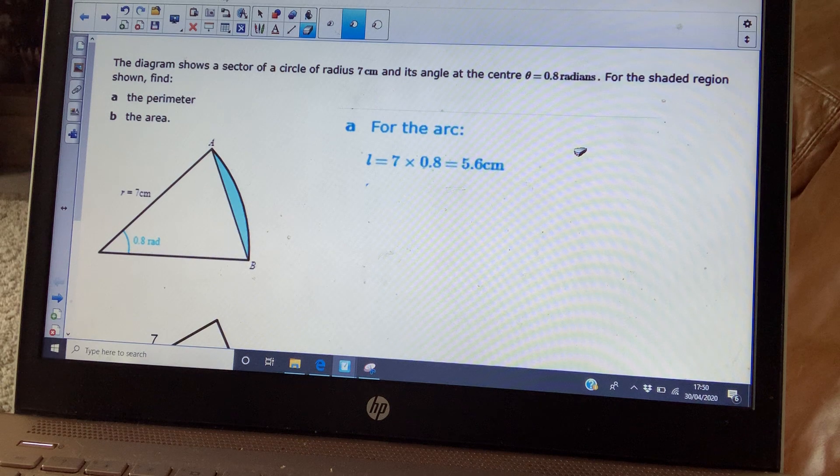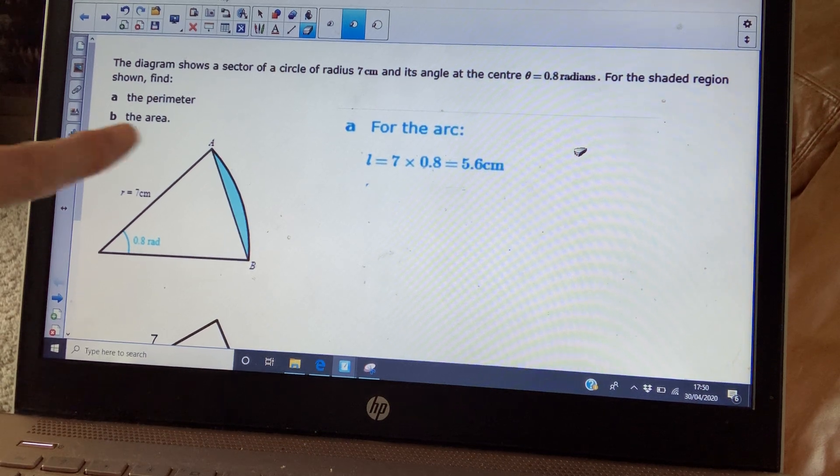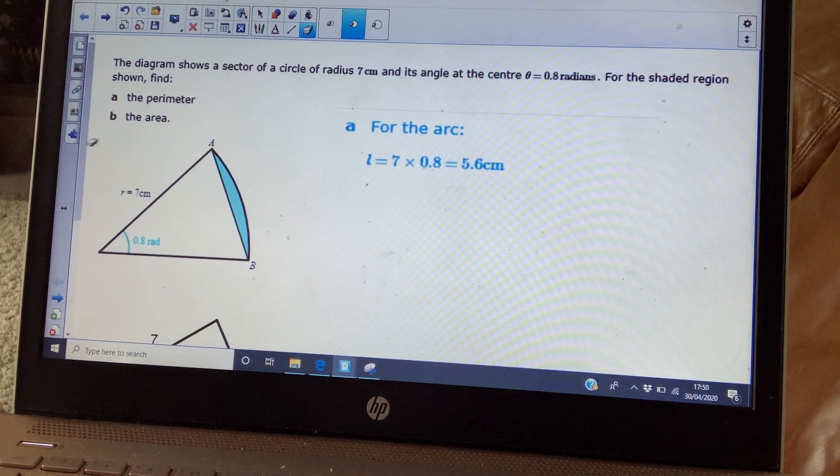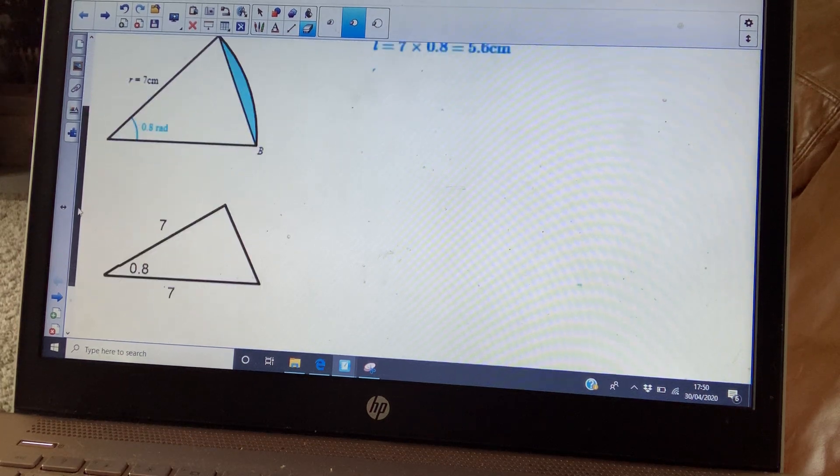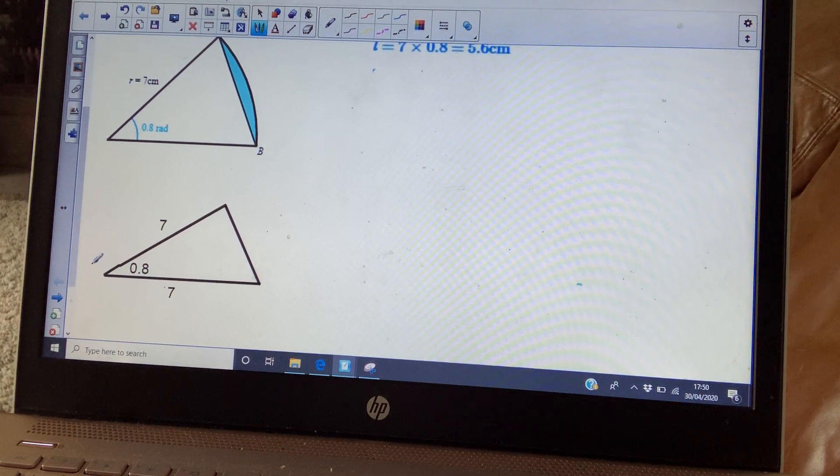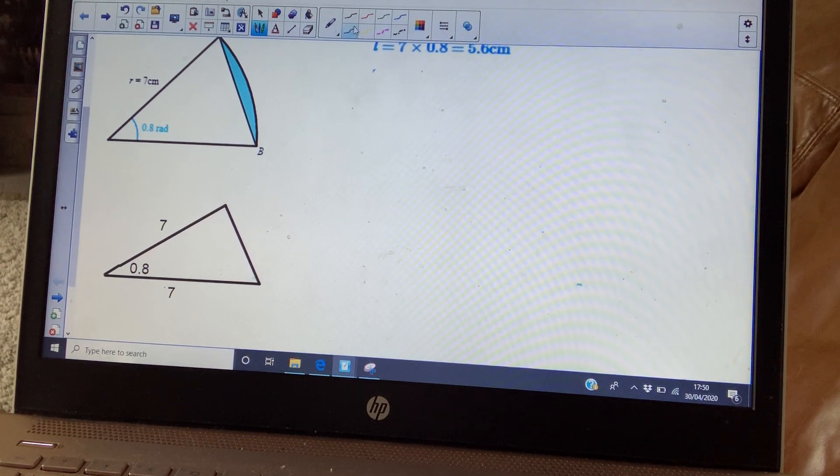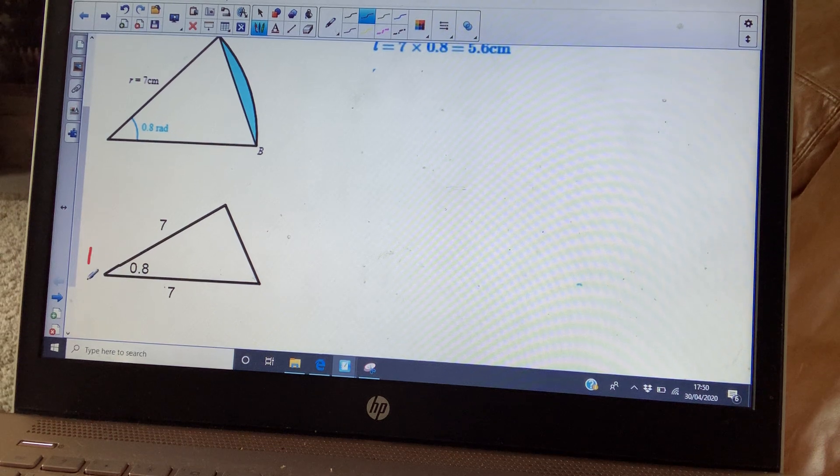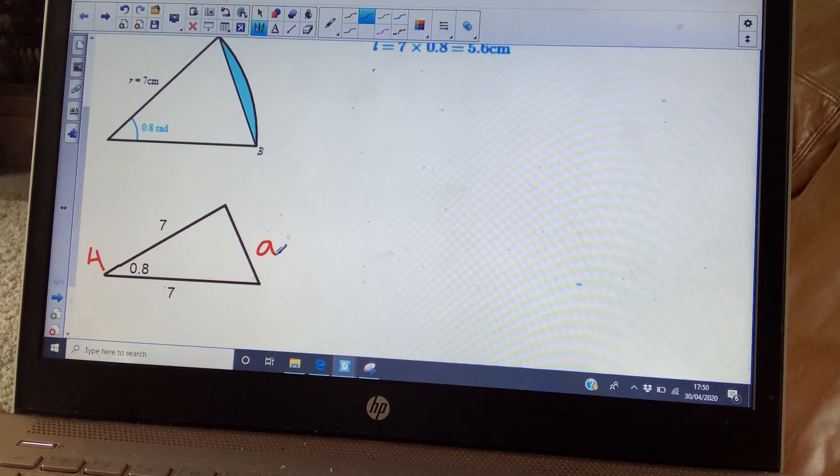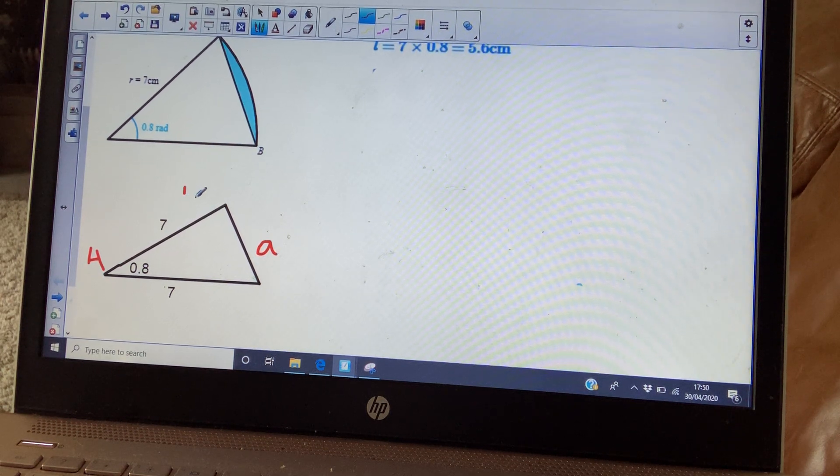What you need to now do is find the length of this chord. And to do that, you're going to have to use the cosine rule. So if you draw out your triangle, what you can do is label it. So that's going to be your angle at A. So that will be side a, and these are going to be b and c.